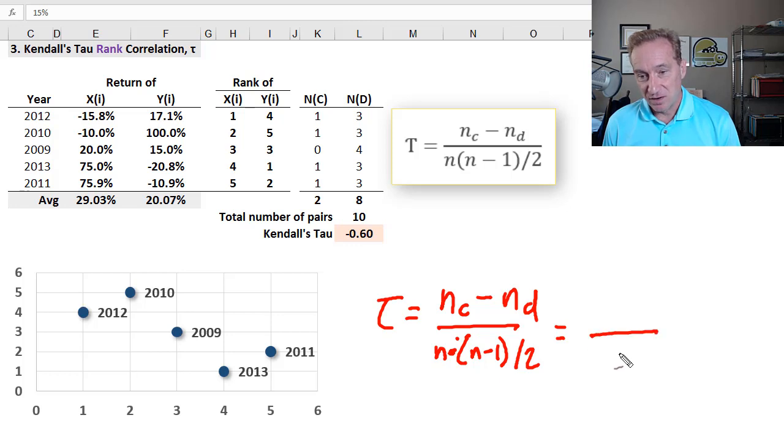And so, we've already said, that is ten total pairs, and here we have eight minus two, concordant minus discordant, is, I'm sorry, two minus eight, is negative six, giving us the Kendall's tau of negative point six.